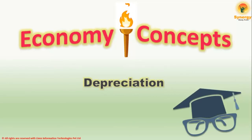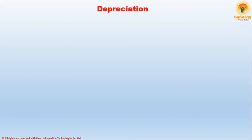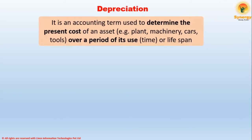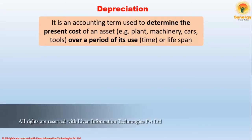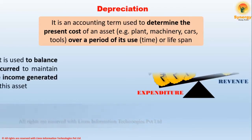Depreciation is an accounting term used to determine the present cost of an asset over a period of its use. When we say cost of an asset, it refers to plant, machinery, cars, and tools. When we say a period of its use, it means lifespan. For businesses, it is used to balance the expenses incurred to maintain an asset and the income generated with the help of that asset.